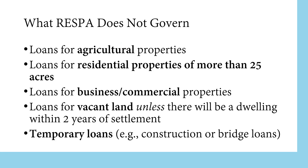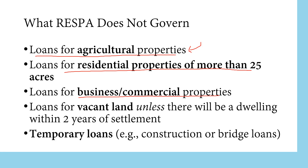What RESPA does not govern are the following: loans for agricultural properties, loans for residential properties of more than 25 acres, loans for business or commercial properties, and loans for vacant land unless there will be a dwelling within 2 years of settlement.